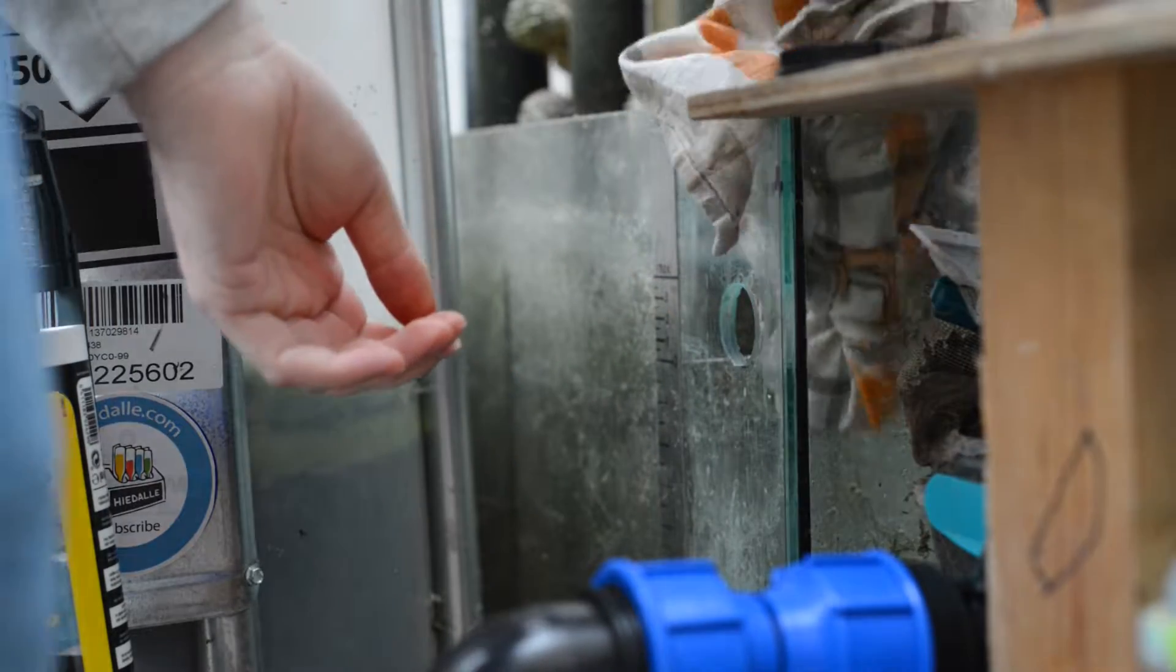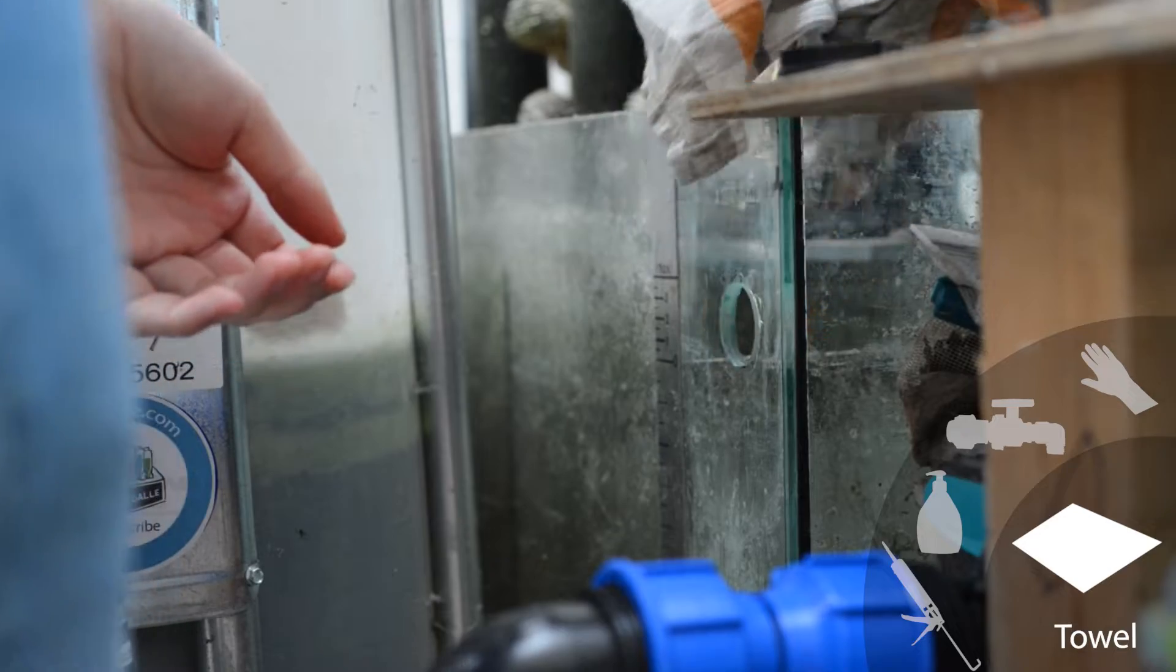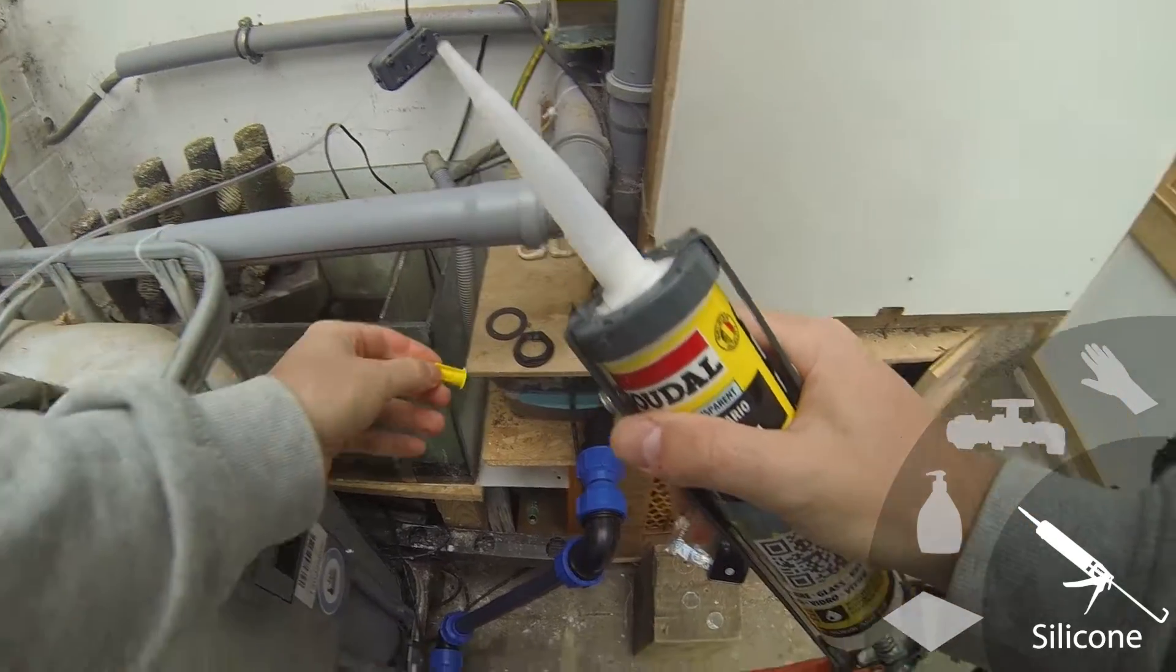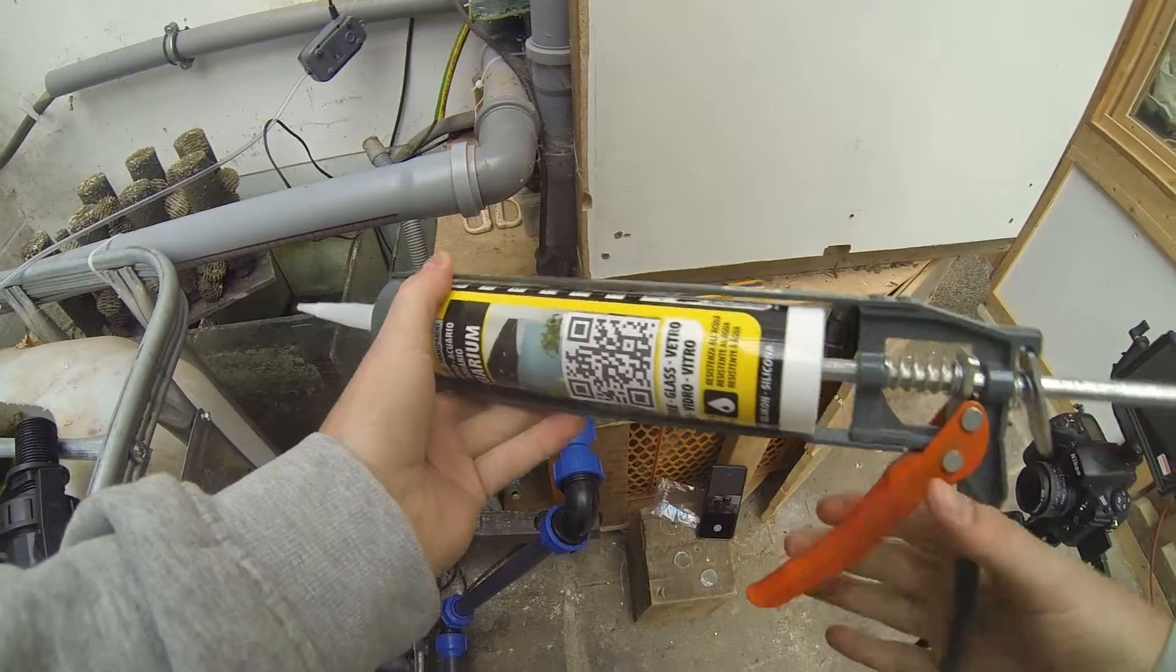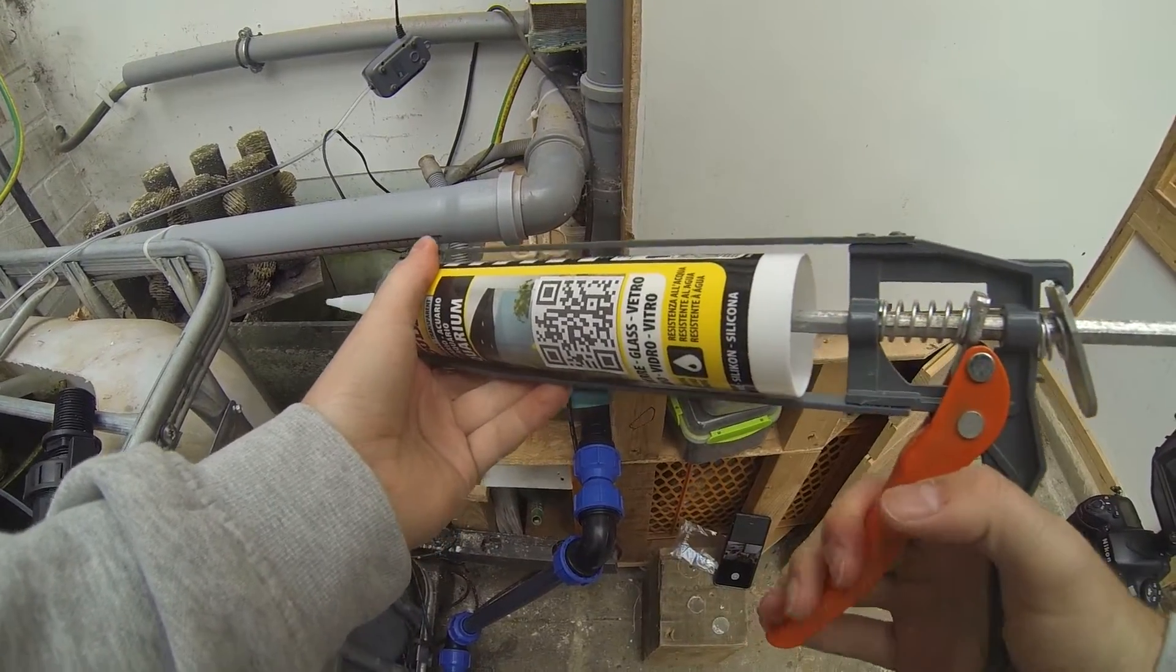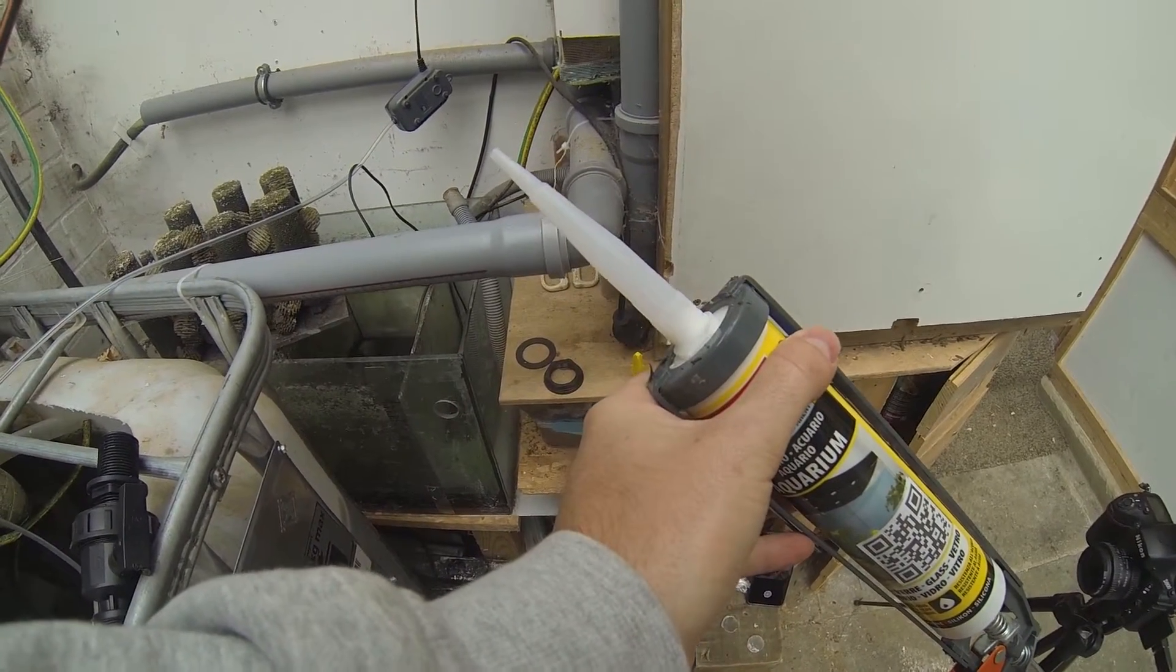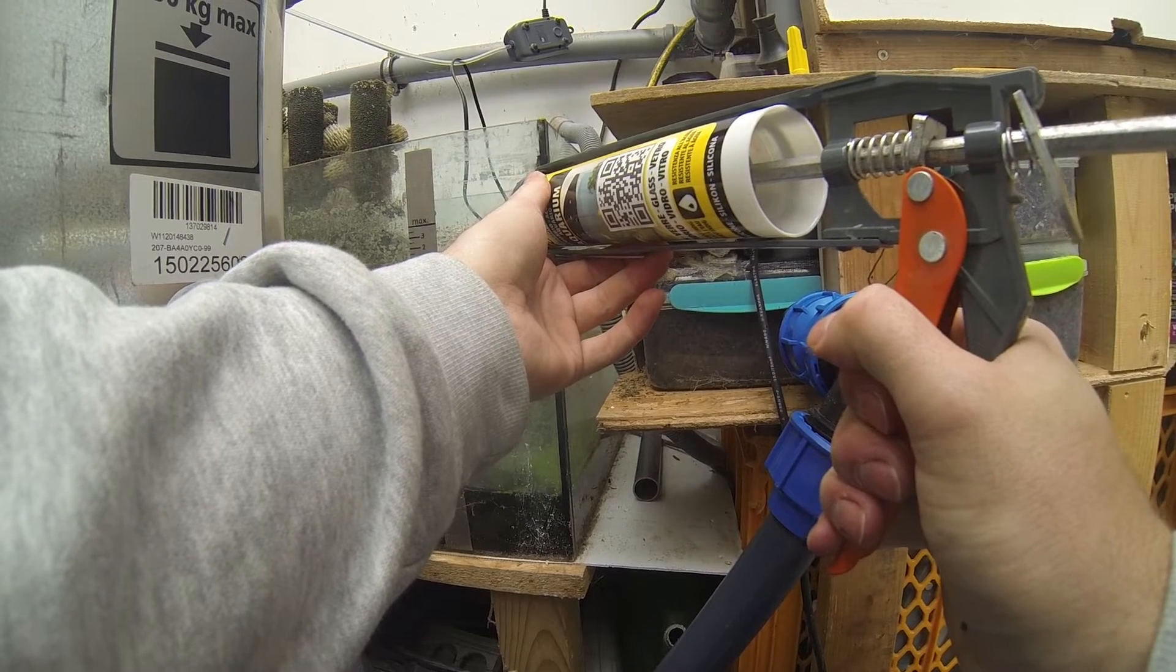I use transparent silicone here but any color of aquarium silicone will do the job. I usually use the transparent version because it's not as visible, especially the smearing which can be removed later. But if you miss a spot it does not look as bad as with the black silicone in my opinion.